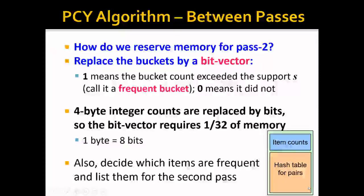So how do we reserve memory for the second pass? One idea is to replace the buckets by a bit vector, because we only care about whether or not the bucket is frequent. We only need one bit to store this information: 1 means the bucket count exceeds the support, and 0 means it did not. This way, we reduce memory usage from 4 bytes per bucket to 1 bit per bucket—only 1/32 of the memory. We can use the saved memory for the second pass, and we still need to decide which items are frequent and list them for the second pass.